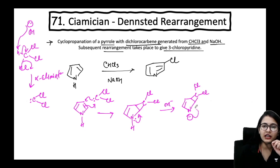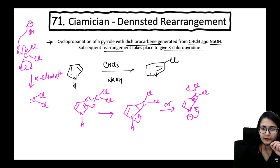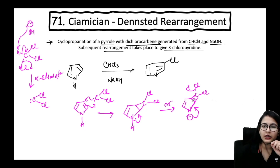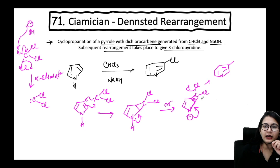The negative charge falls onto the nitrogen-carbon bond. This middle bond breaks apart, and one Cl⁻ leaves. Following the arrows: the negative charge falls on this bond, the middle bond migrates, that bond breaks — you get a bigger ring, and you obtain the pyridine molecule with its double bonds intact.